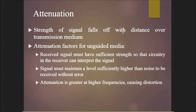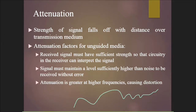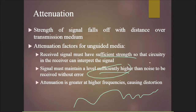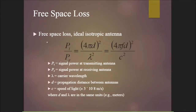Attenuation means the strength of a signal falls off with distance over a transmission medium. For unguided media, the received signal must have sufficient strength so that the receiver circuitry can interpret it. The signal must maintain a level sufficiently higher than the noise to be received without error. Attenuation is greater at higher frequencies, causing distortion.